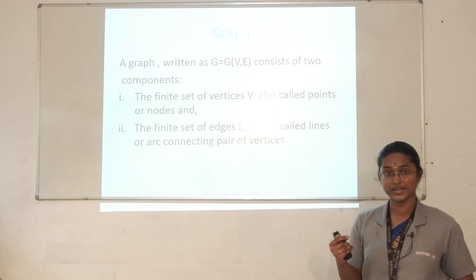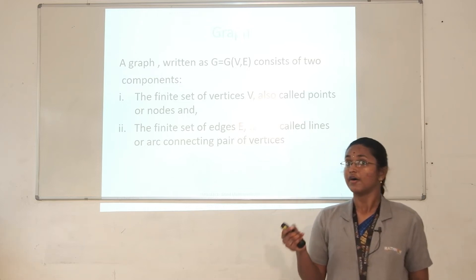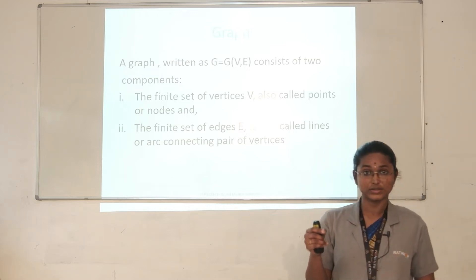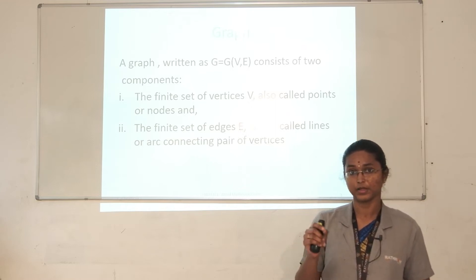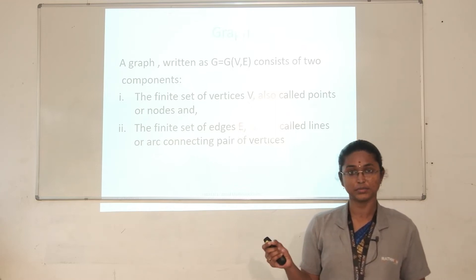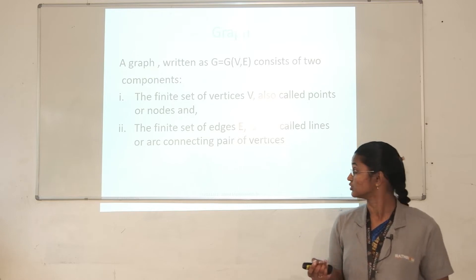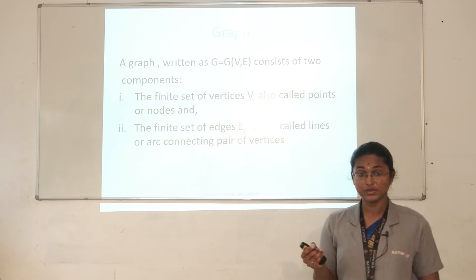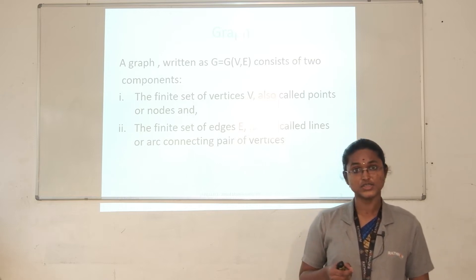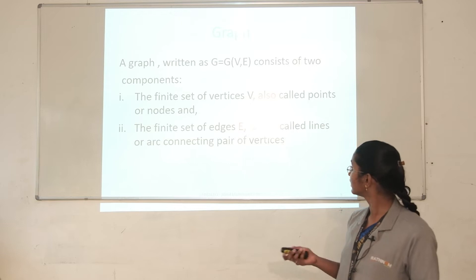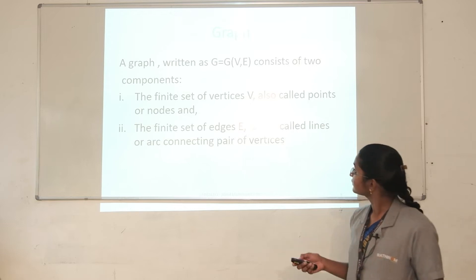For example, if you take the transportation problem, we have a bus and road transportation problem. There will be bus terminals, and in between the terminals there will be roads. The terminals are called nodes and the roads connecting these terminals are called edges.